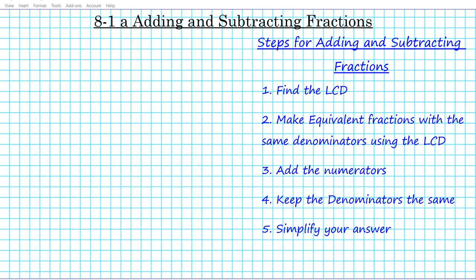Before we get started, let's go over the steps we're going to be using to add and subtract fractions. First, look at the denominators — in order to add or subtract fractions the denominators have to be equal. If they are not equal, find the LCD. Step two: make equivalent fractions with the same denominators using the LCD. Then add or subtract the numerators depending on the operation, keep the denominators the same, and finally simplify your answer.